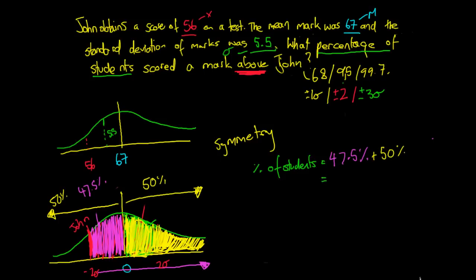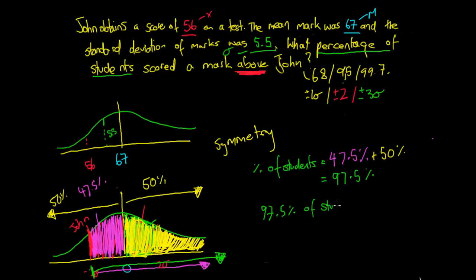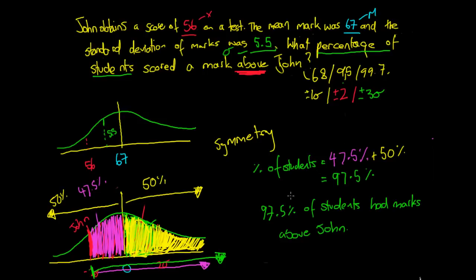Taking 47.5% plus 50% gives us 97.5%. So 97.5% of students had marks above John. That's our calculation — the pink area plus the yellow area. If we were John, we'd be pretty disappointed to be beaten by 97.5% of people, but hopefully next time we'll do better. Just apply these rules and we can work it out nice and easily. Thanks guys, I'll put up another example on a similar concept. Cheers.